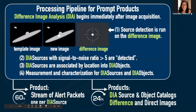The LSST Prompt Processing Pipeline is based on Difference Image Analysis, or DIA. DIA begins immediately after image acquisition when the new image is subtracted from a template image to create a difference image. Template images are created out of previously obtained images combined in such a way as to be transient-free. Difference image sources detected with a signal-to-noise ratio greater than 5 are referred to as DIA sources. All DIA sources at a given sky coordinate are referred to as a DIA object. The Prompt Processing Pipeline detects DIA sources and then associates them with DIA objects, or creates a new DIA object if there are no previous detections at that sky coordinate.